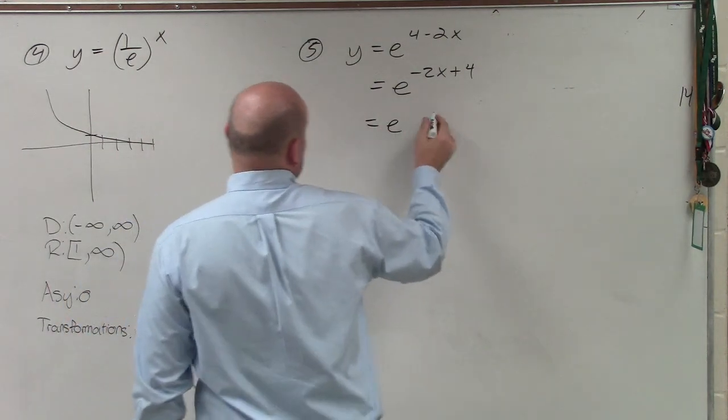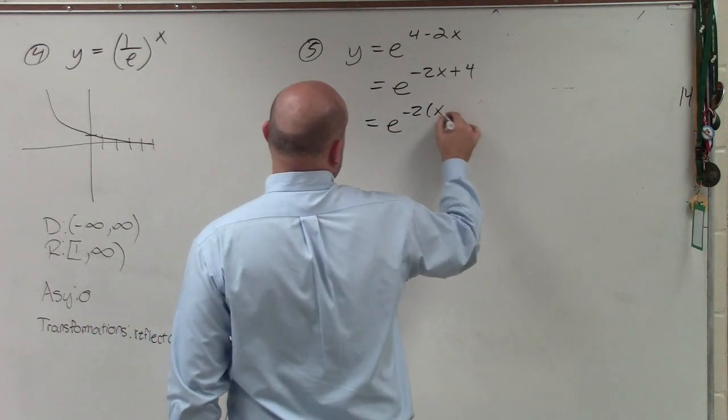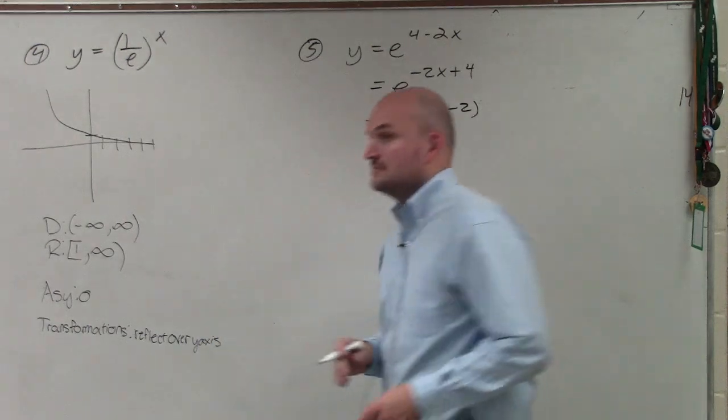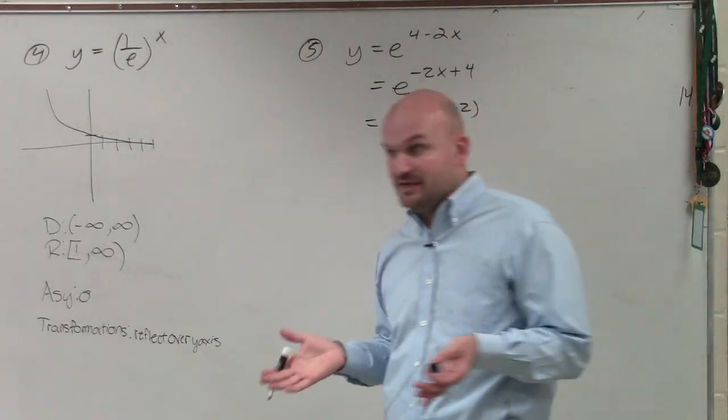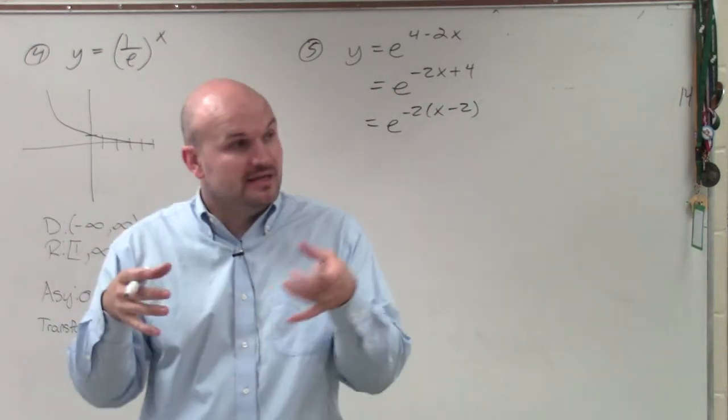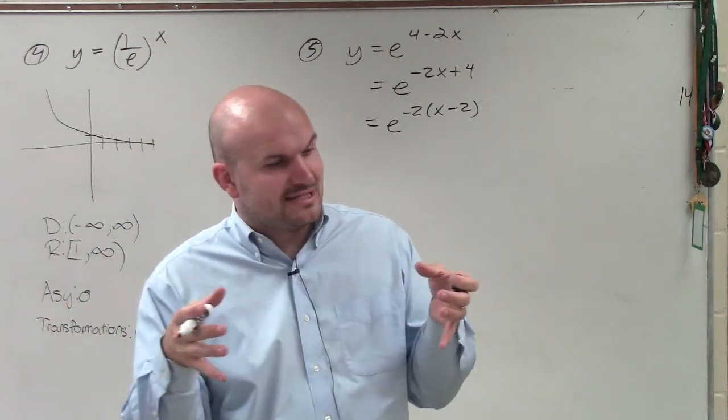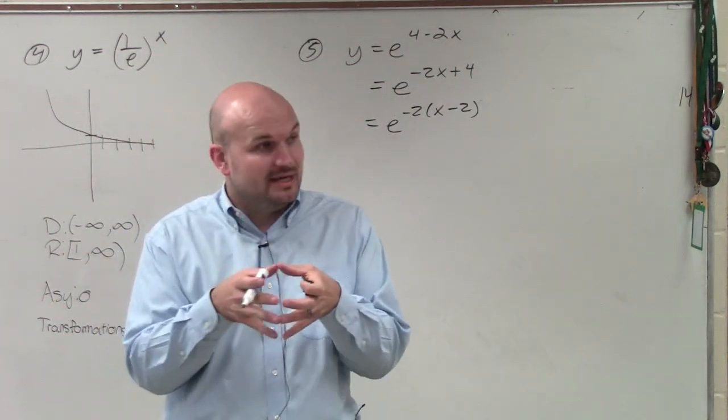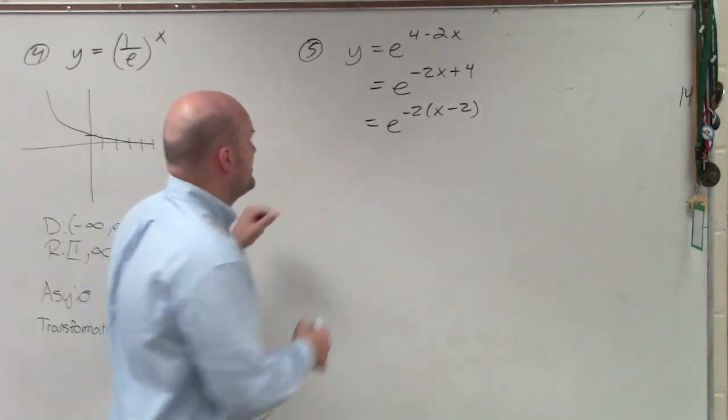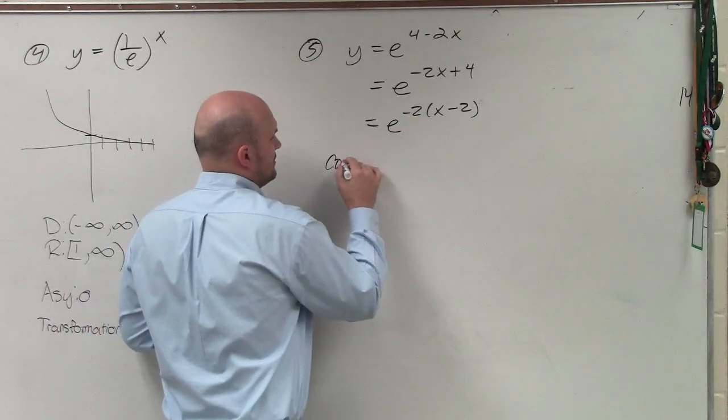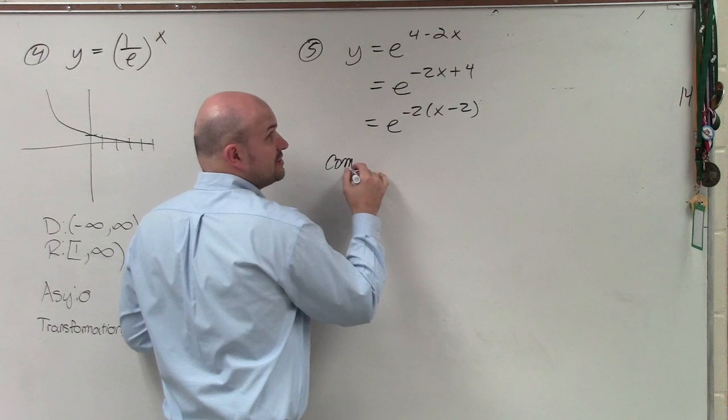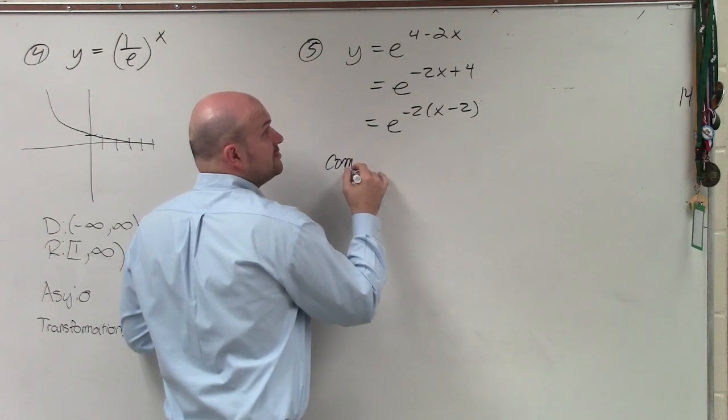So now I'll have e to the negative 2 times x minus 2. Okay, so that tells me a couple different things. One, I'm going to have a horizontal compression on the inside of my function. So I'm going to have a compression.